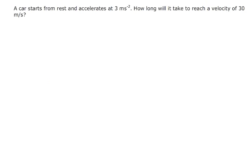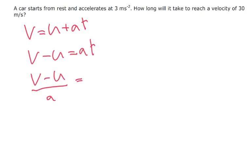A car starts from rest and accelerates at 3 metres per second squared. How long does it take to reach a velocity of 30 metres per second? OK, so we're looking for time this time. So V equals U plus AT. V minus U equals AT. V minus U divided by A equals T.